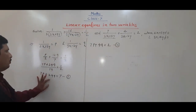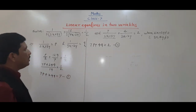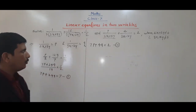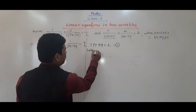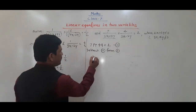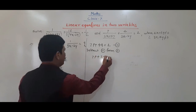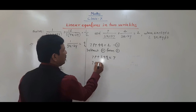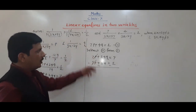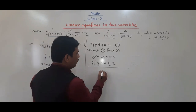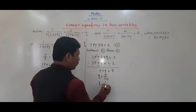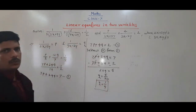So the first equation is 7p + 24q = 7 and the second is 7p + 4q = 2. We can subtract the second equation from the first. Doing so, 7p cancels, leaving 20q equal to 5, so q is equal to 5 by 20, which means q = 1 by 4.